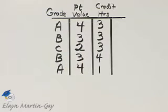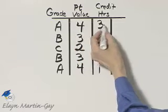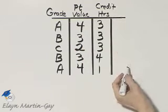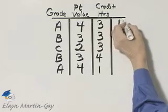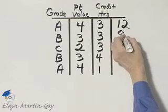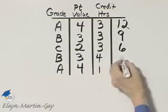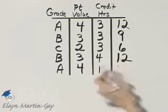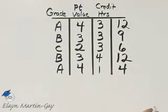We need to find the product of the point value and the credit hours, so this is just a product column. Four times three is 12. Three times three is nine. Two times three is six. Three times four is 12. And four times one is four.